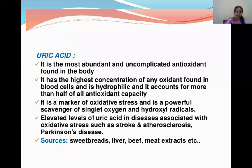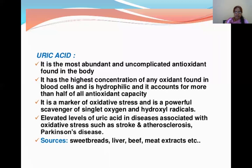Uric acid is an abundant antioxidant found in the body. It is a marker of oxidative stress and a powerful scavenger of singlet oxygen and hydroxyl radicals. Elevated levels of uric acid are found in diseases associated with oxidative stress such as stroke, atherosclerosis, and Parkinson's disease. Sources of uric acid include liver, beef, red meats, and meat extracts.